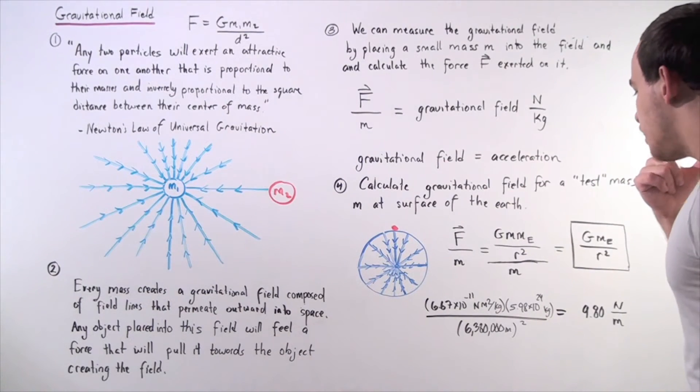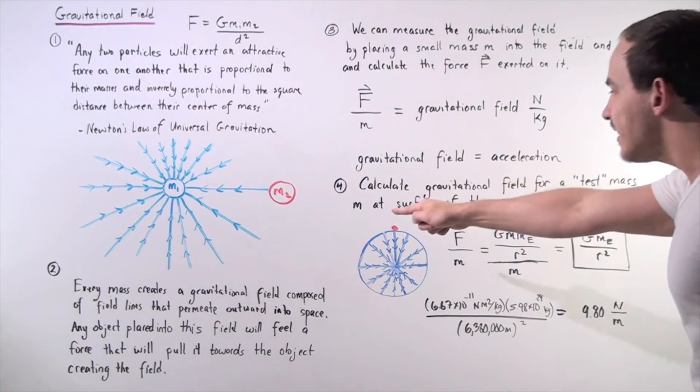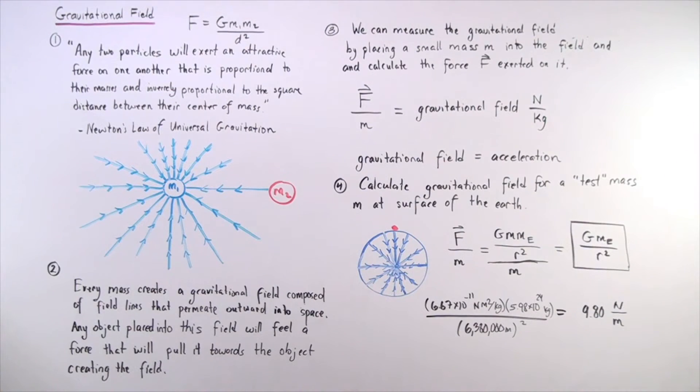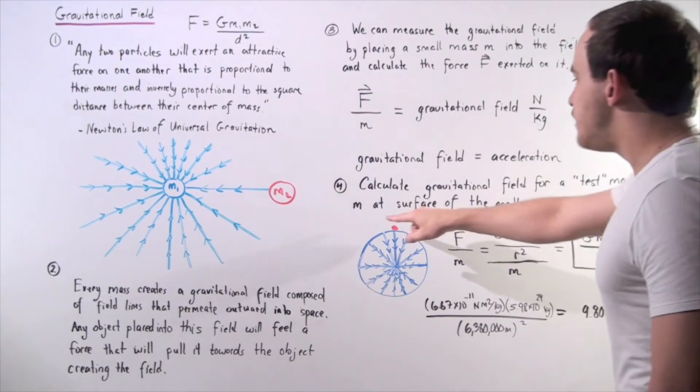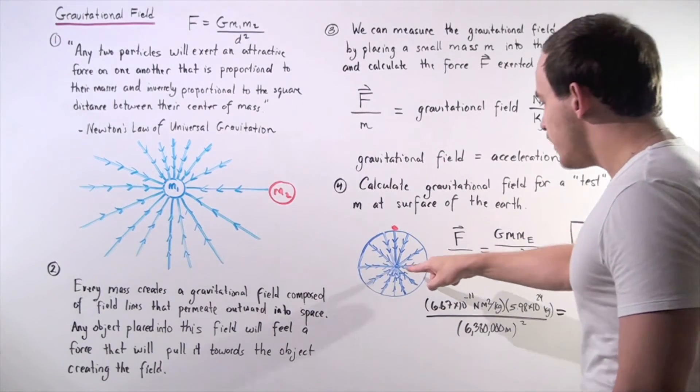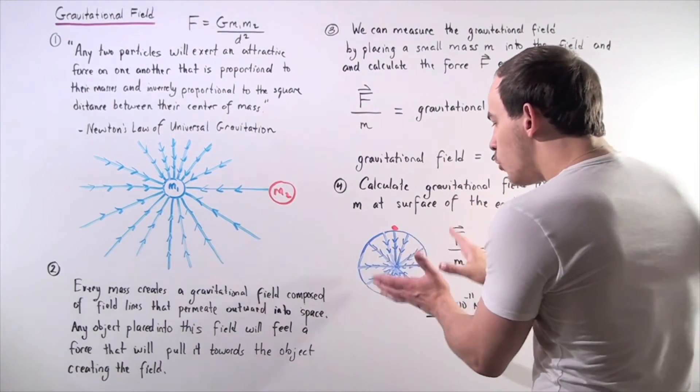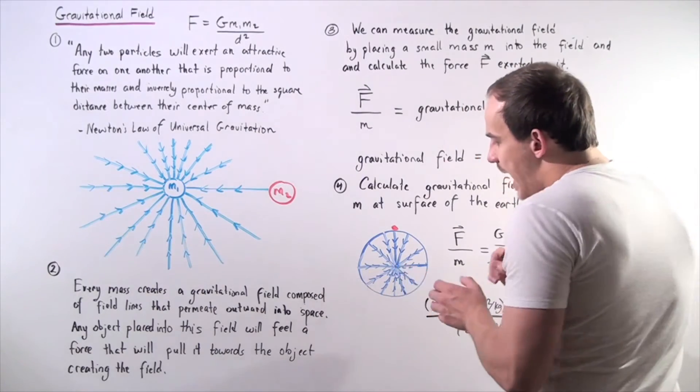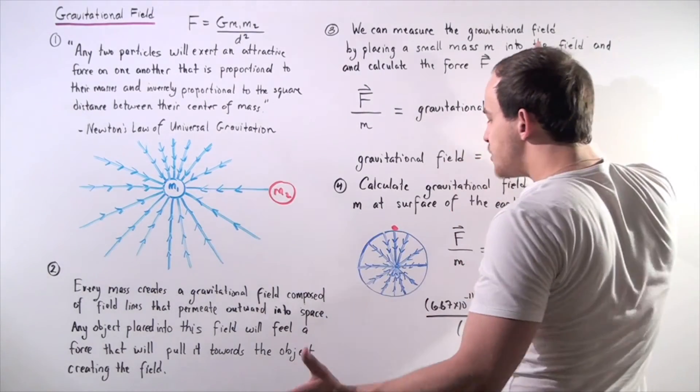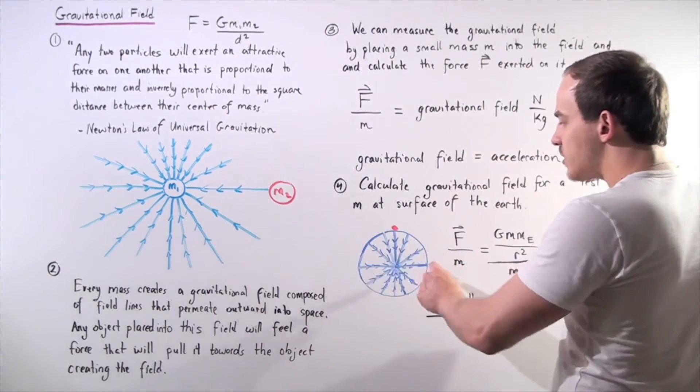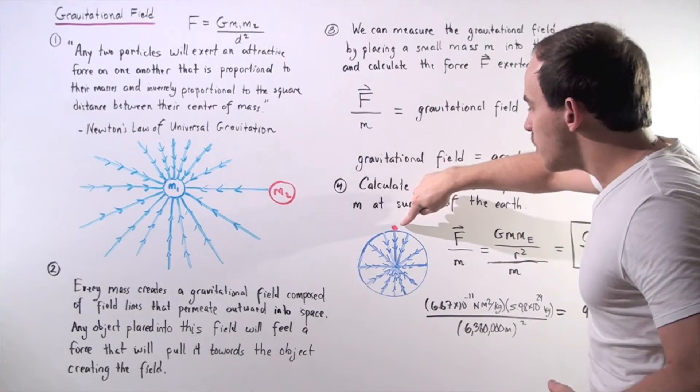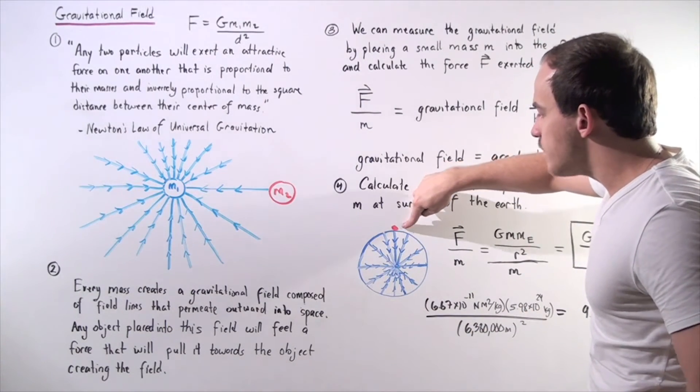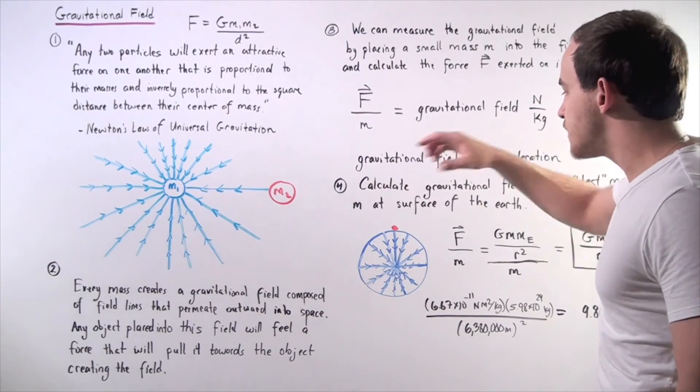So let's do one very quick example. Calculate the gravitational field for a test mass found at the surface of the Earth. So, here we have our Earth, we're assuming the Earth is a point mass. So, it begins here and it permeates through space, as shown here. So, we want to calculate what the gravitational field is of our object found on the surface of the Earth.